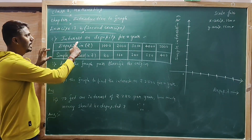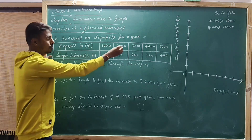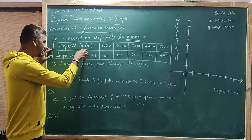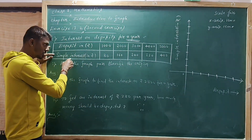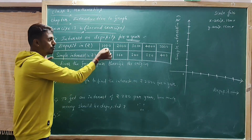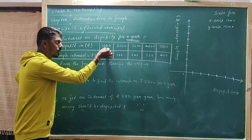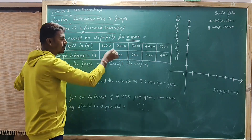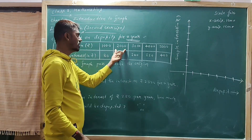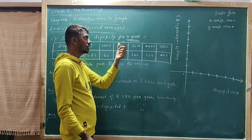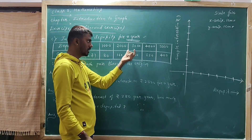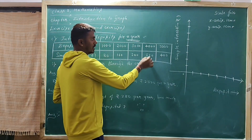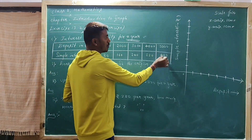Third problem: interest on deposits for a year. The deposit amount and simple interest are both in rupees. If the deposit is 1000, the interest for a year is 80 rupees. For 2000 the interest is 160 rupees; for 3000 it is 240 rupees; for 4000 it is 320 rupees; for 5000 it is 400 rupees.